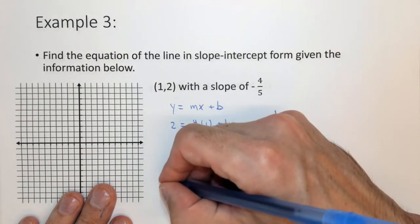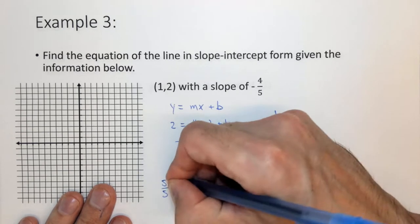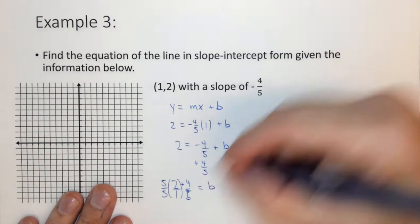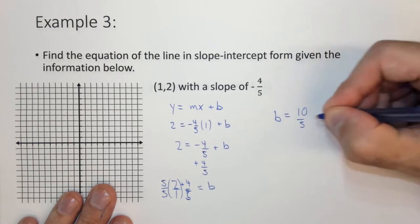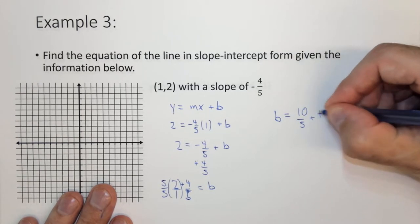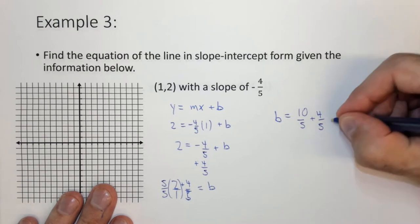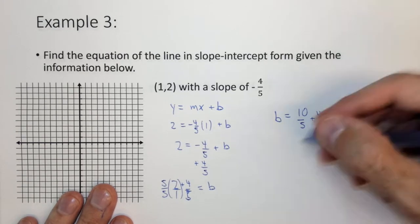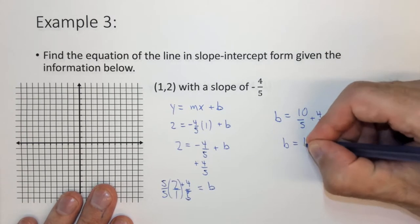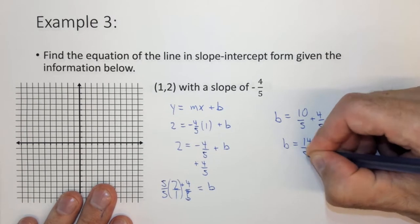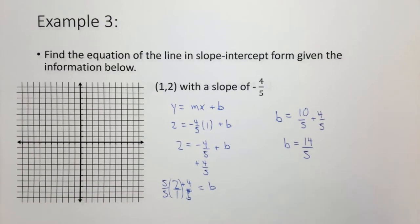So in order to define b, b equals, well we have to add 2 plus 4 fifths. In order to get this a 5 on the bottom, we have to multiply it by 5 over 5 times 2 over 1. And what we end up with is 10 fifths plus 4 fifths is what our value of b is. Or b equals 14 fifths.